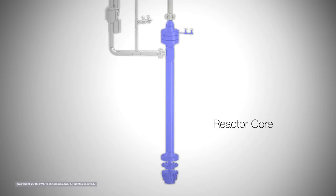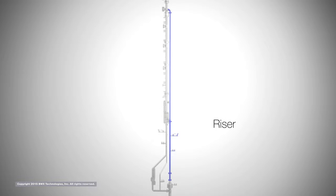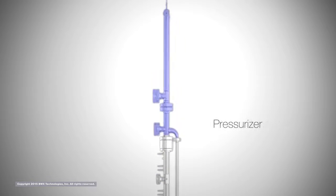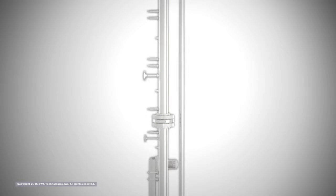The test loop consists of a reactor vessel with an electrically heated core, a riser assembly that conducts the hot reactor coolant to the inlet of the steam generator and to the pressurizer. The steam generator is a once-through counter flow shell and tube heat exchanger.